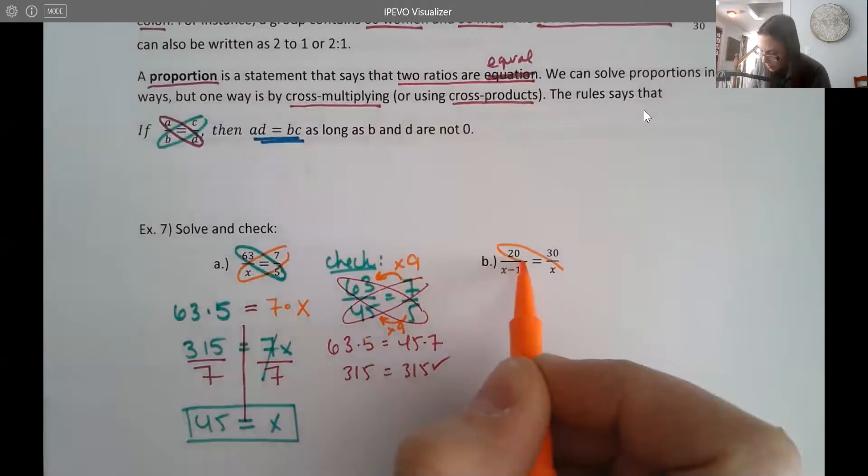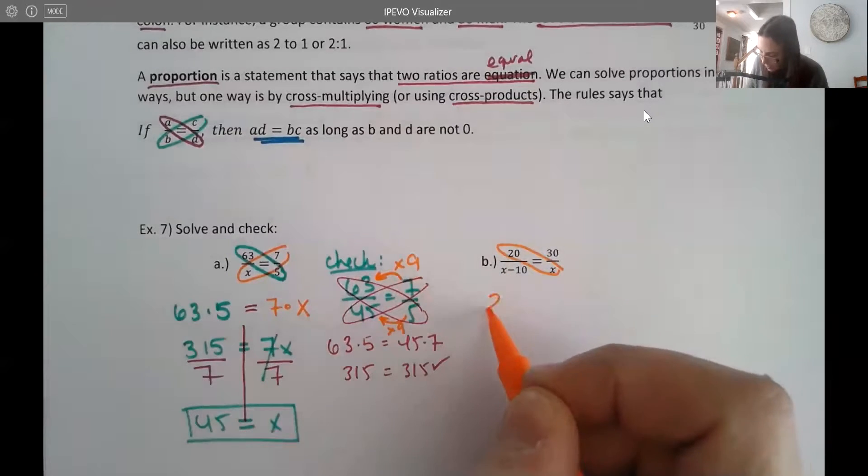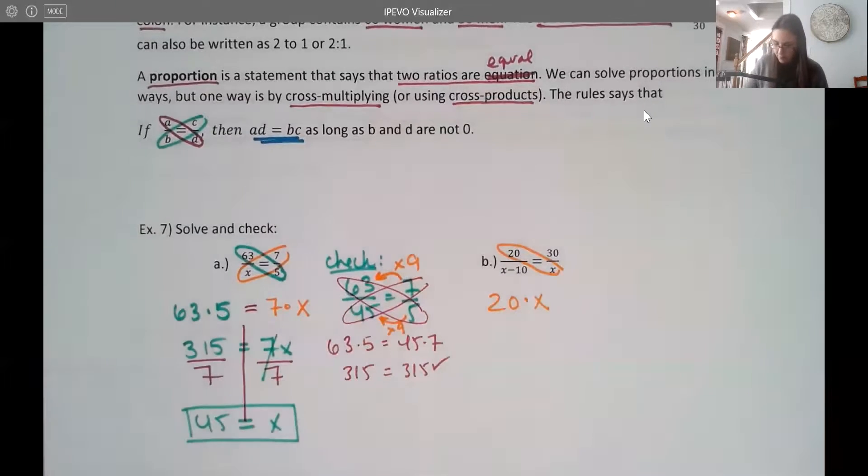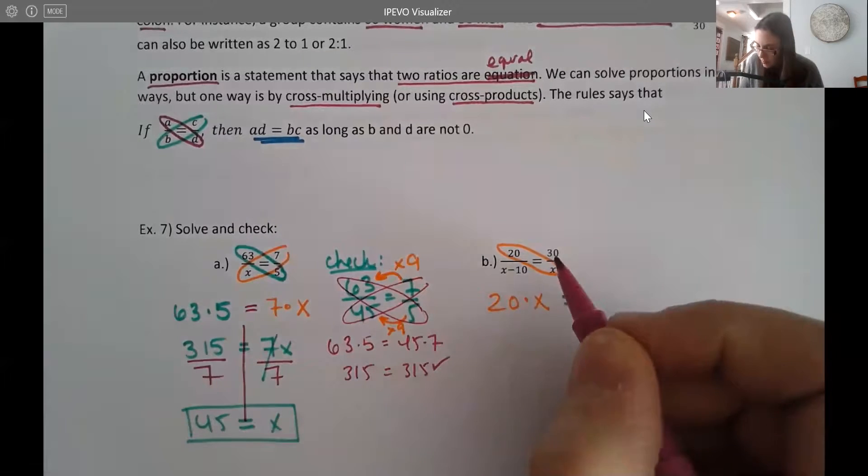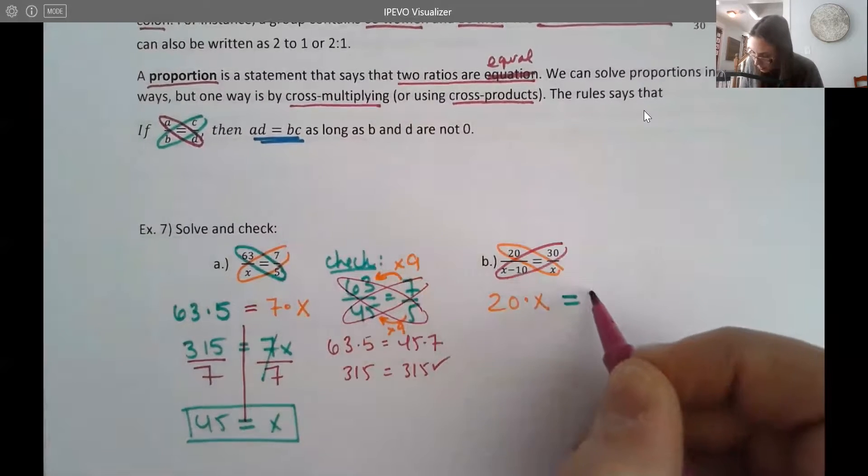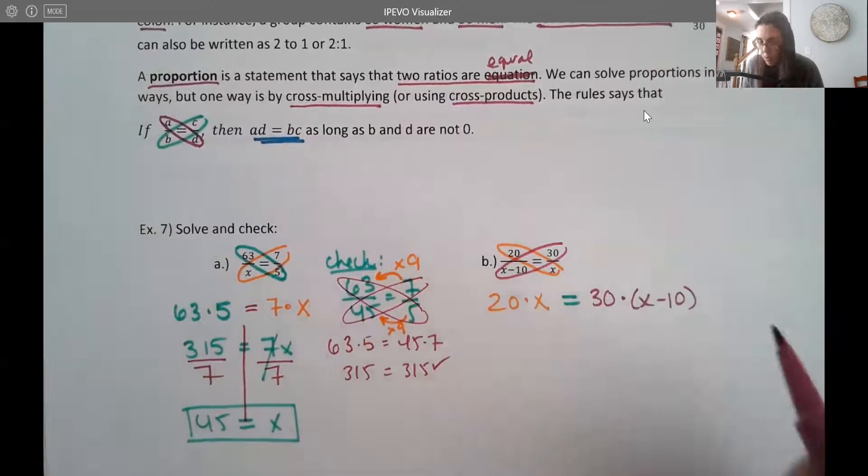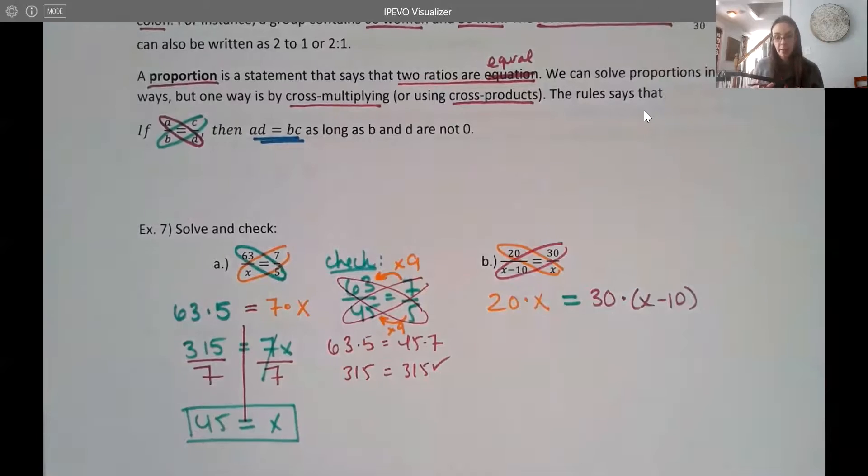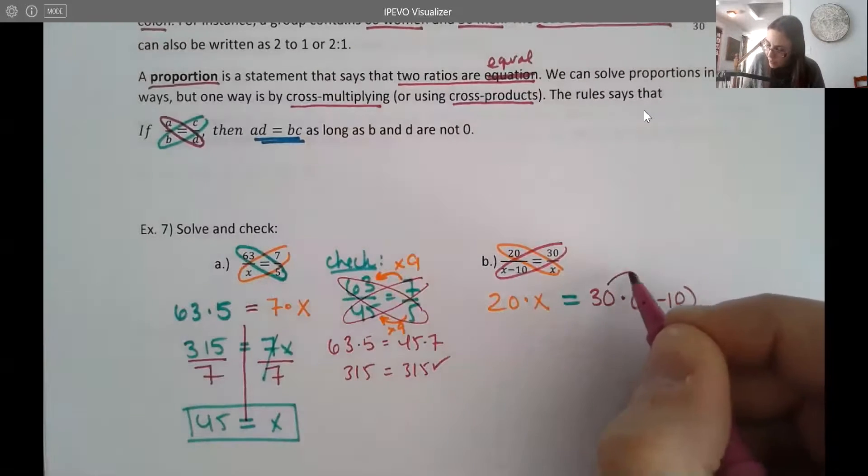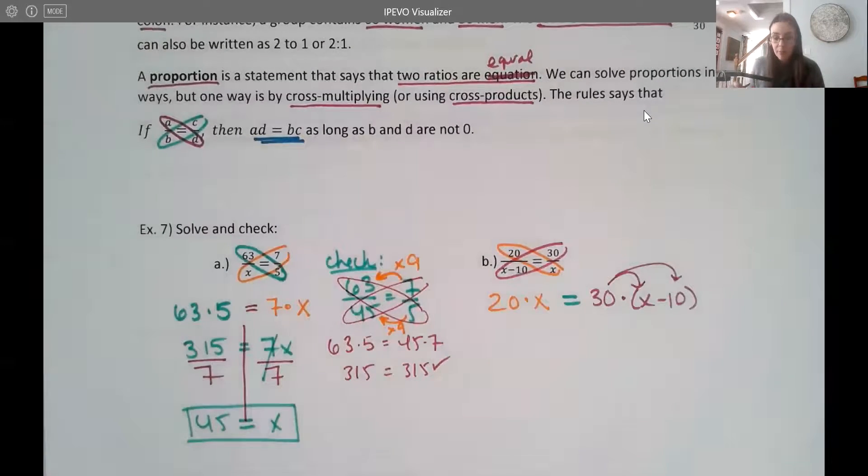All right, let's do one more here. So I'm going to go this way. 20 times X equals, and then we're going to go this way. So 30 times, and be careful here, that denominator is X minus 10. So I am going to use parentheses there because the whole thing is being multiplied by the 30, which means that we're going to end up distributing that 30 to both pieces.